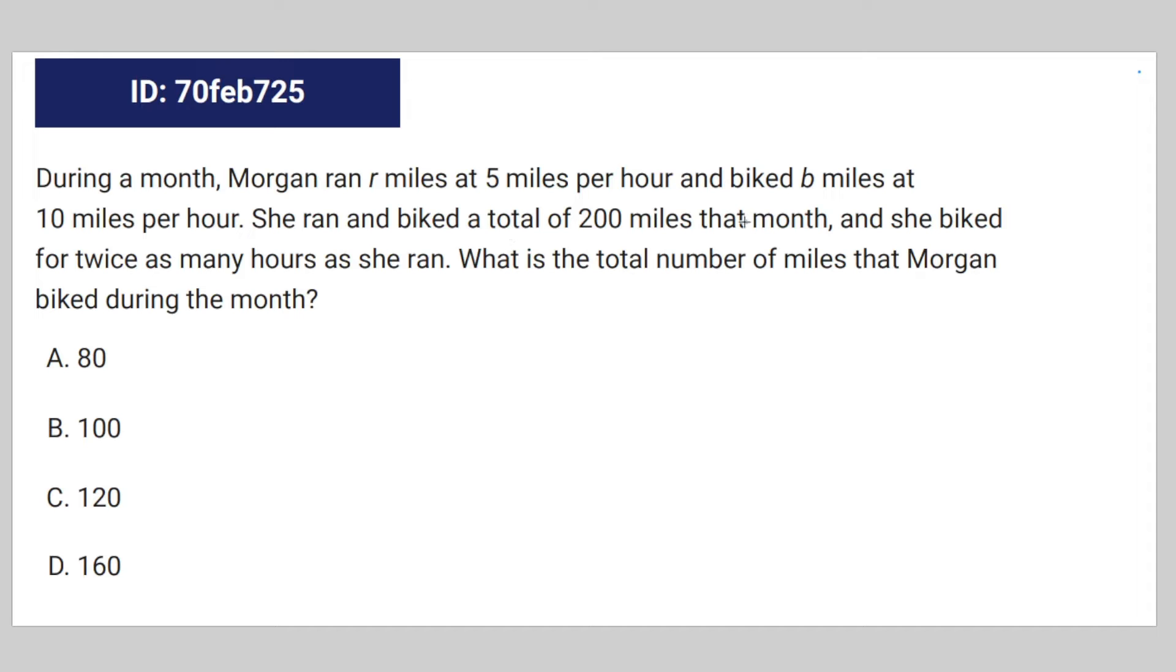So let's say she ran and bicycled for an equal amount of time. The relationship between b and r is going to be equal to b equals 2r. But she actually didn't bicycle and run for this amount of time. She biked for twice as many hours as she ran.